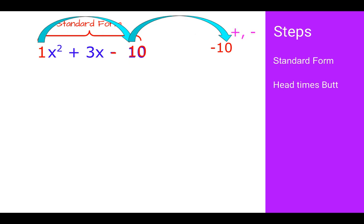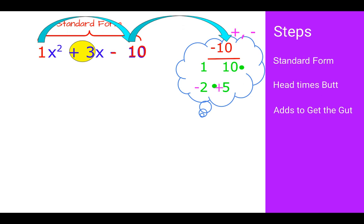So I know to get a negative number when you multiply, I need a positive times a negative. If I list my factors of 10, I have 1 times 10 and 2 times 5. I need to add to get the gut, which is the positive 3x. 1 and 10 will never give me 3. But 5 and negative 2, 5 minus 2 is 3, and 5 times negative 2 is negative 10. That is the choice that I'm going to select.